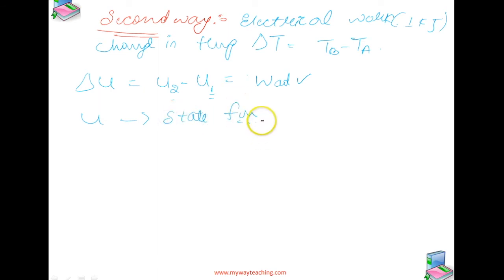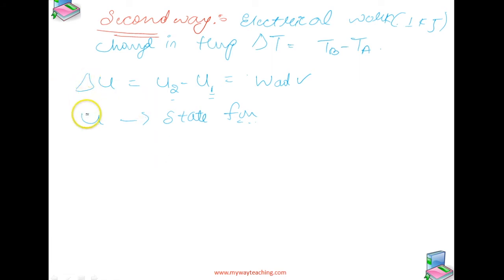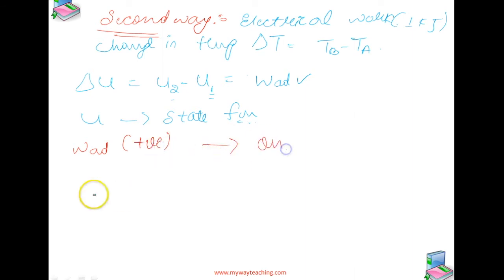Therefore, internal energy U of the system is a state function. The adiabatic work W_ad is positive when work is done on the system, and negative when work is done by the system.